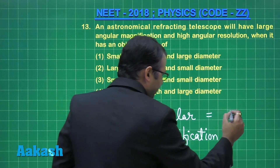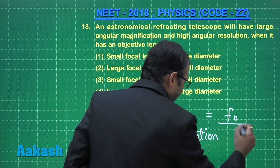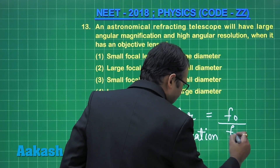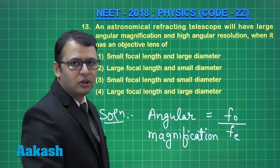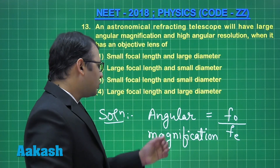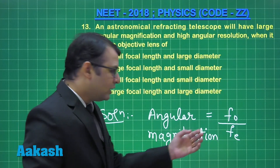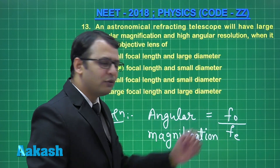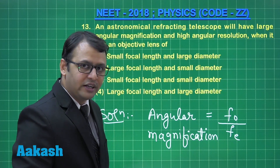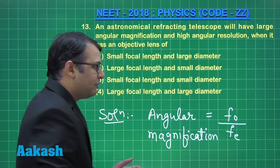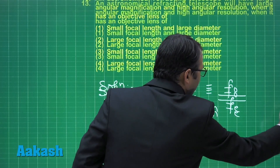For angular magnification, the formula would be focal length of objective divided by focal length of eyepiece. So in order to keep angular magnification high, the focal length of the objective should be very large.